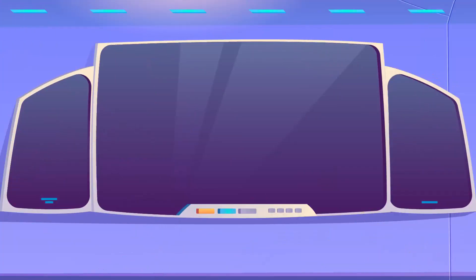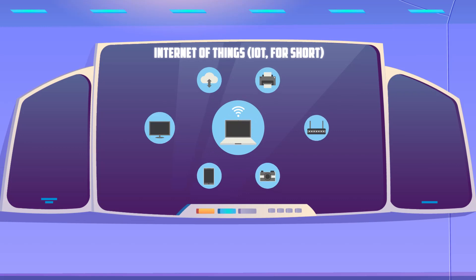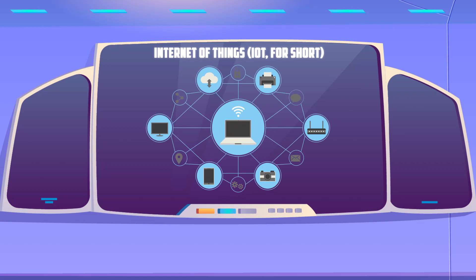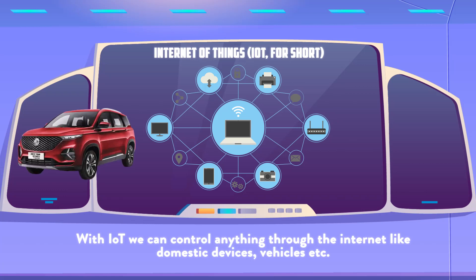Now let's go deeper into the chapter to find out what is the Internet of Things. The Internet of Things, IoT for short, is a term used for the increasing number of everyday devices and objects that are connected to the Internet and are capable of gathering and transmitting data. With IoT, we can control anything through the Internet like domestic devices, vehicles, etc. One of the best examples of this is the car MG Hector.